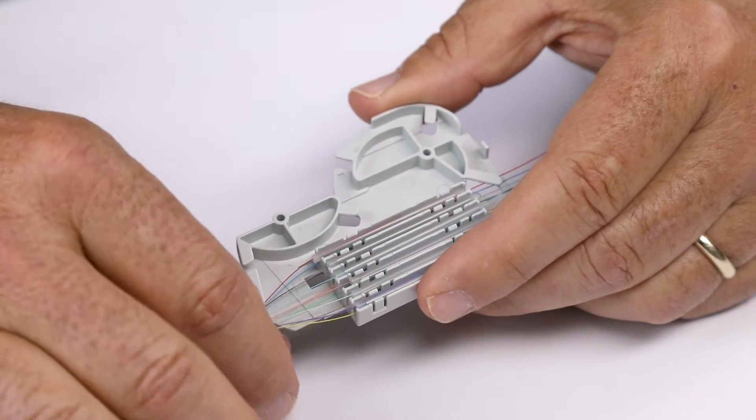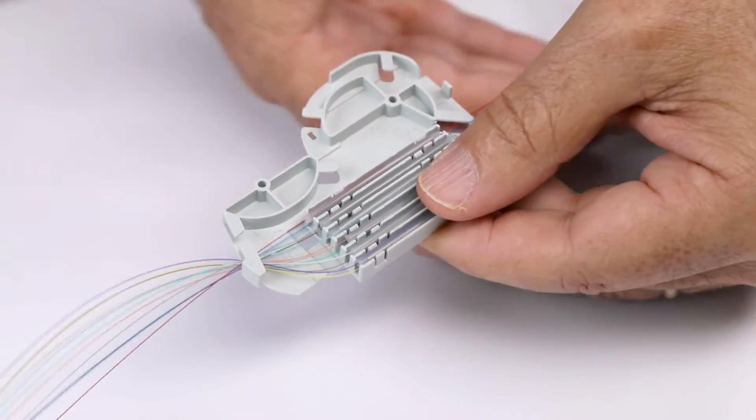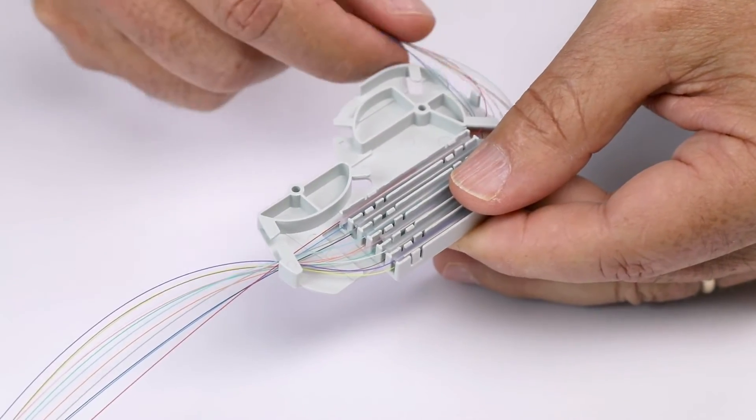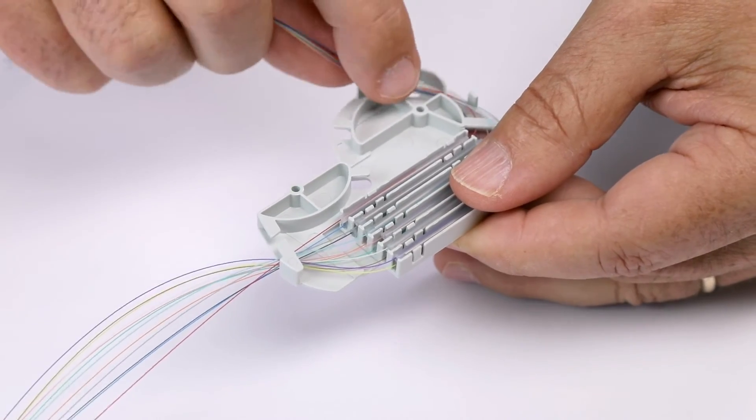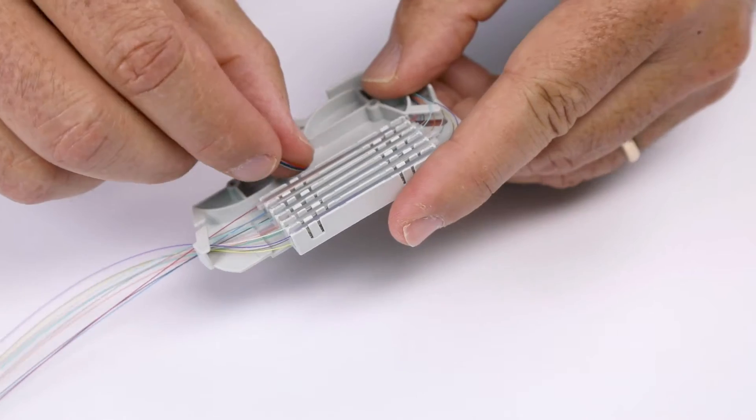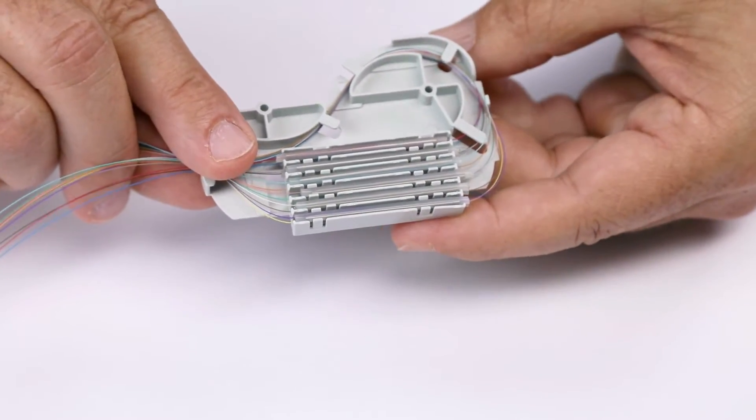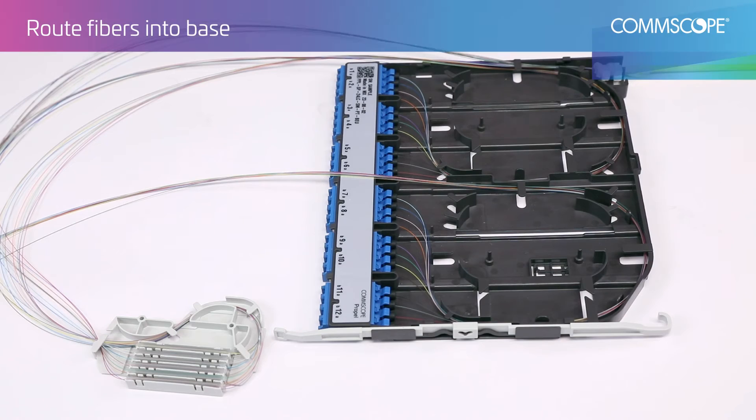Using the spool fiber fingers, route pigtail fibers counterclockwise until feeder and pigtail fibers converge. Position spools to prepare for routing.